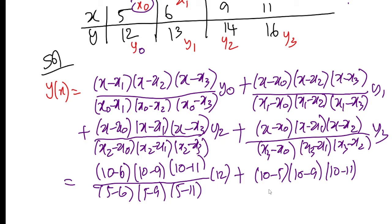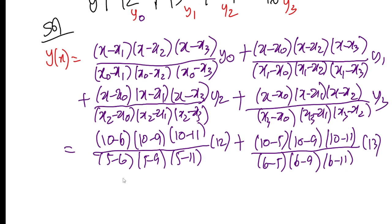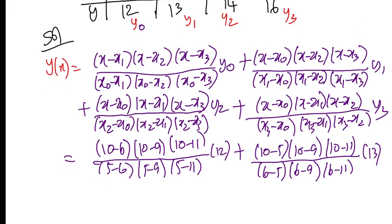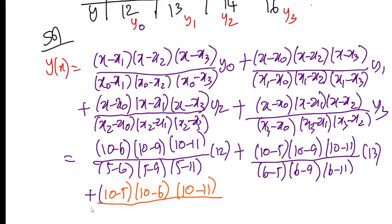For x1 equals 6: the denominator terms are 6 minus 5, 6 minus 9, 6 minus 11, and y1 equals 13. Next, for x2 equals 9: we strike out x2 in the numerator, leaving x minus x0, x minus x1, x minus x3, which gives 10 minus 5, 10 minus 6, 10 minus 11. The denominator is 9 minus 5, 9 minus 6, 9 minus 11, and y2 equals 14.